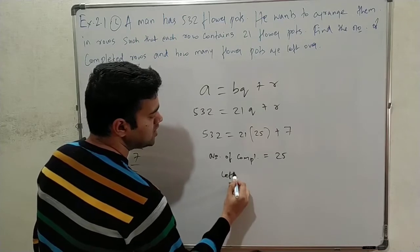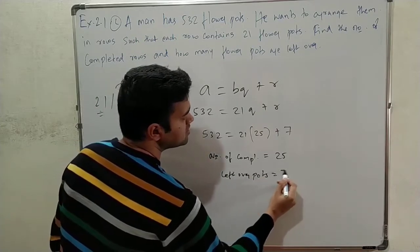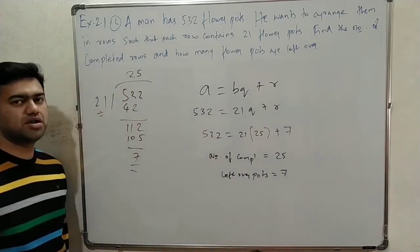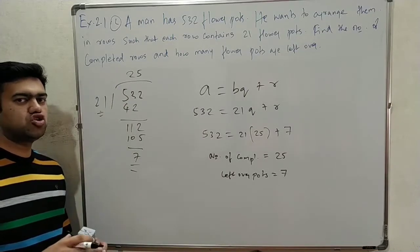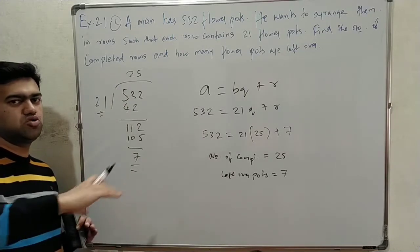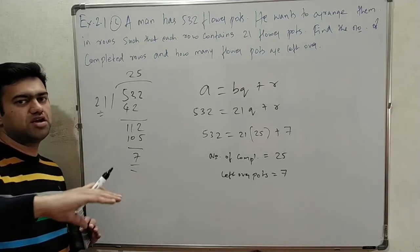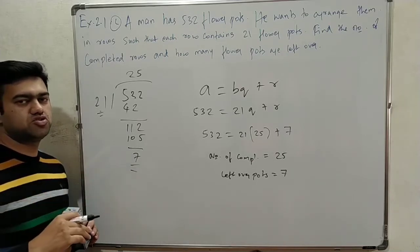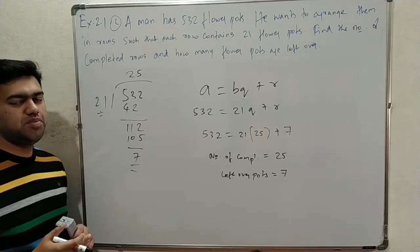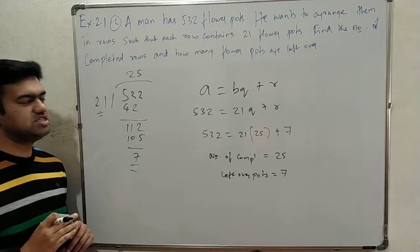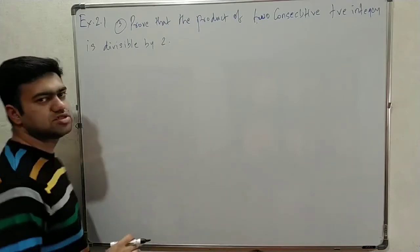So the leftover parts are 7. This is the answer. You can relate to this: in your classroom, if there are 20 students and all sit 4-4, there are 5 tables. Similarly here, 25 completed rows with 7 parts left over.